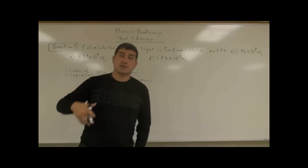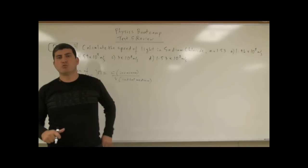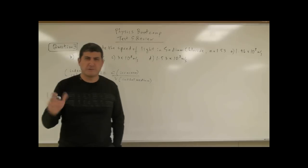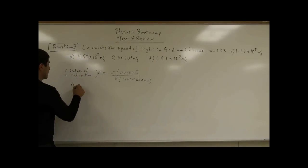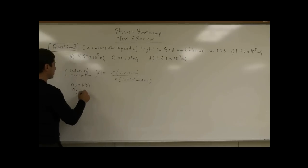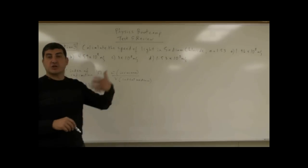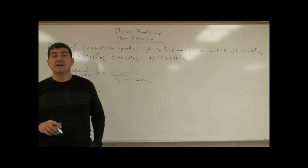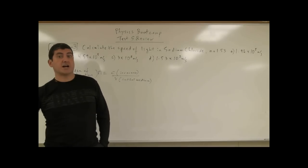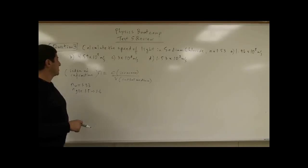Most mediums have indices of refraction that are greater than 1.3 or 1.4. Water has an index of refraction of 1.33. Usually glass has an index of refraction 1.5 to roughly 1.6. Diamond has one of the highest indices of refraction, which is why it's the secret behind why the diamond sparkles so well, because it slows down light quite a bit.